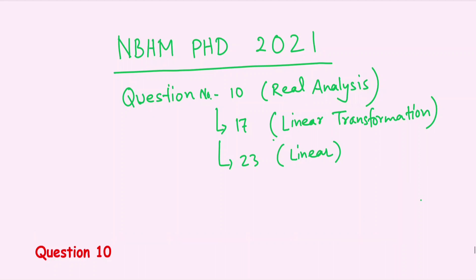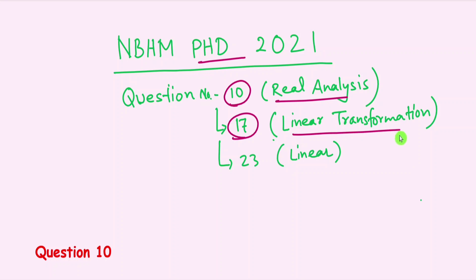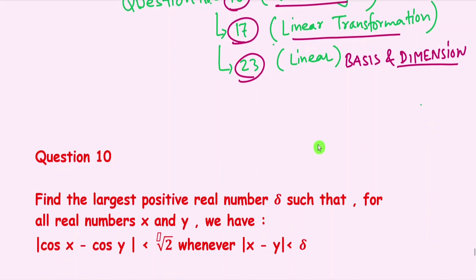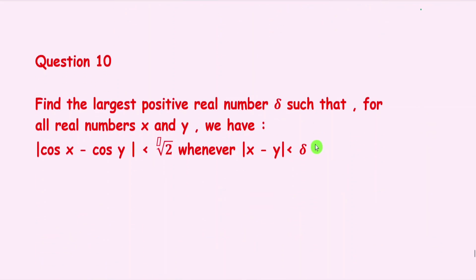Hello everyone, welcome to Maths with Martin. In this video we are solving questions from NBH in PhD 2021. Question number 10 is from real analysis, question number 17 from linear transformation (linear algebra), and question number 23 is from basis and dimension. Let's start the video. Please like the video, comment in the comment section below, and don't forget to subscribe the channel.